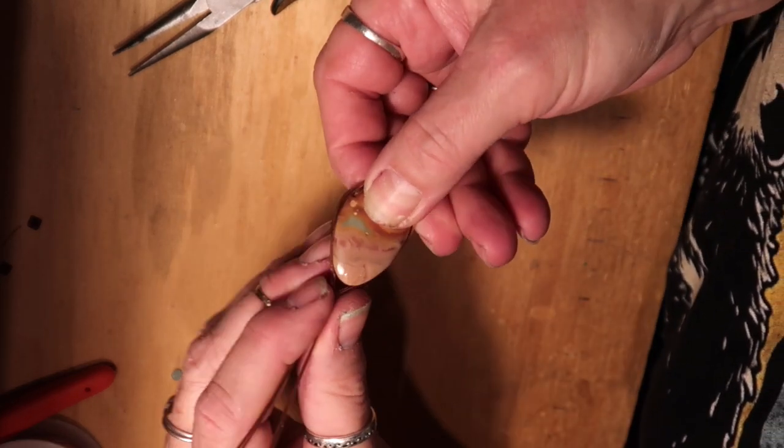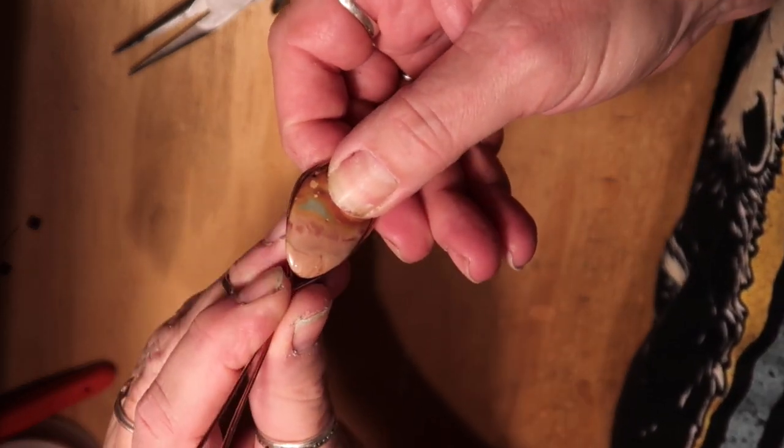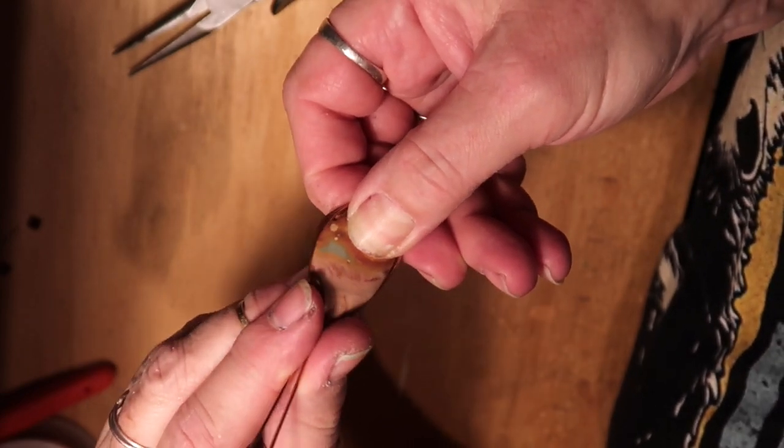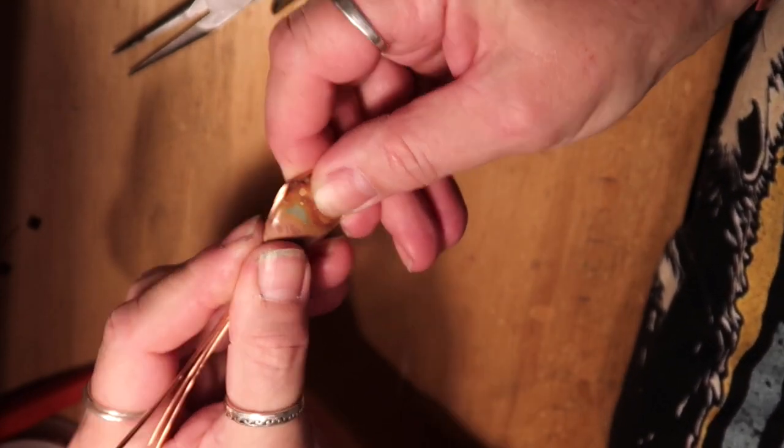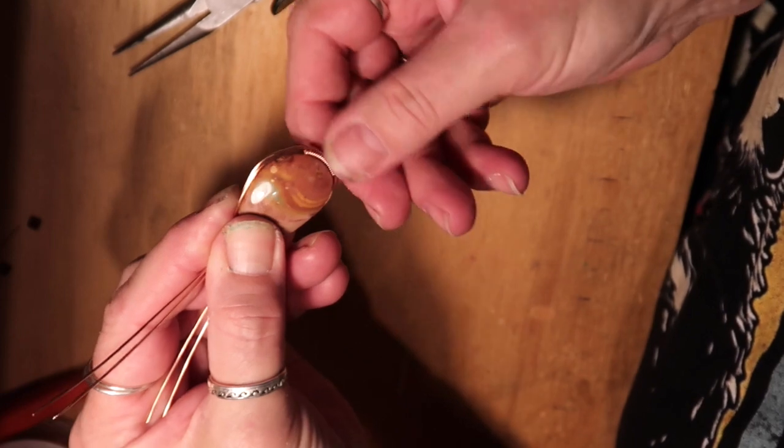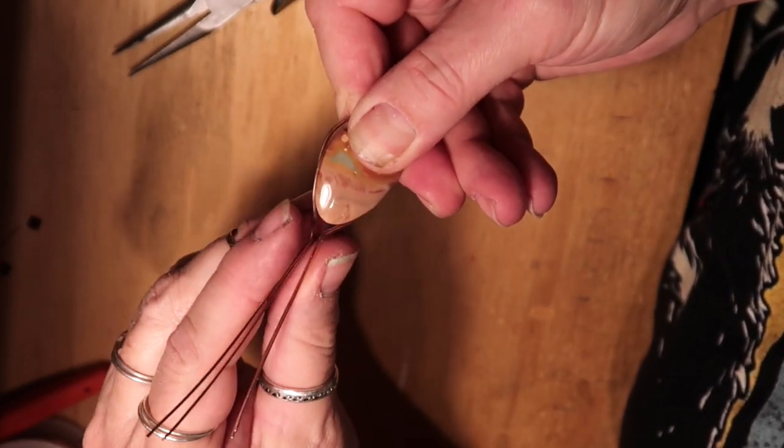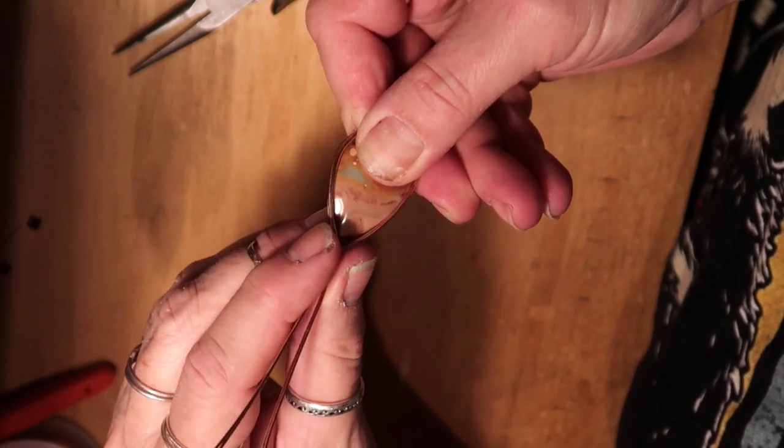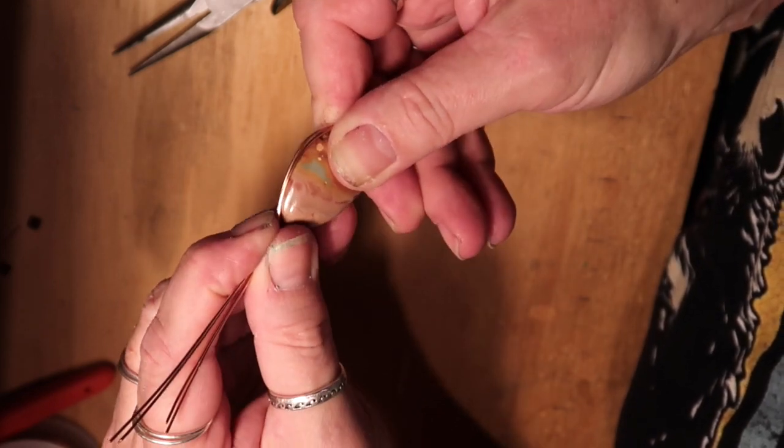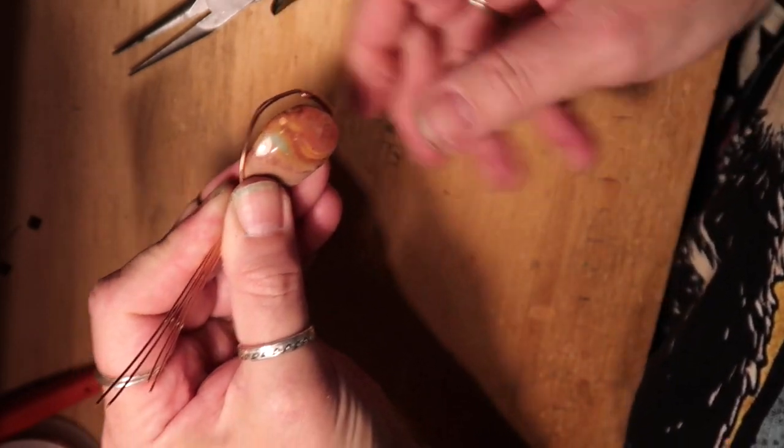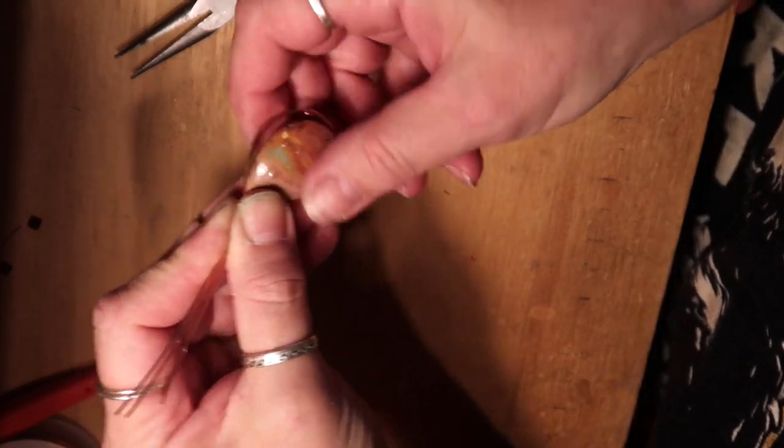And now when I pinch that top together, you can see where the wire comes around to the top. And if this is the bottom of the bail here, you can see how it's going to set that stone in there. So this is good.